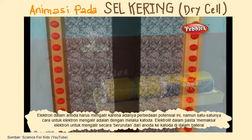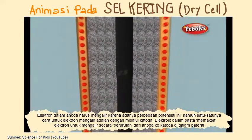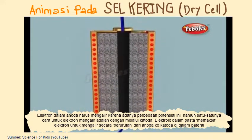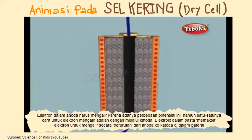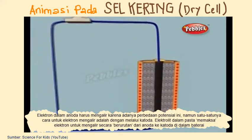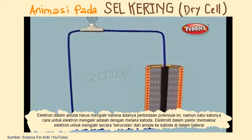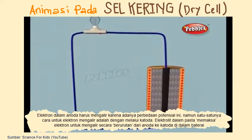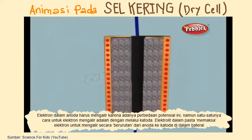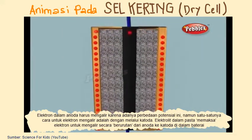The electrons want to rearrange themselves to get rid of this difference, but they do this in a certain way. Electrons repel each other and try to go to a place with fewer electrons. In a battery, the only place to go is to the cathode. But the electrolyte keeps the electrons from going straight from the anode to the cathode within the battery.